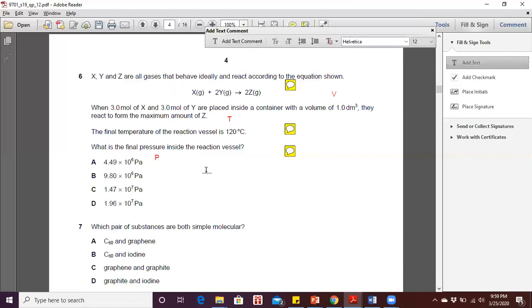So they fulfill the ideal gas law, so we can use this ideal gas equation, which is PV equals to nRT. So P is pressure, V is volume, n is number of mole, R is the ideal gas constant or molar gas constant as given in your data booklet as 8.31, and T is the temperature.